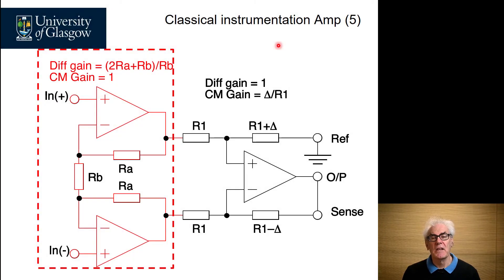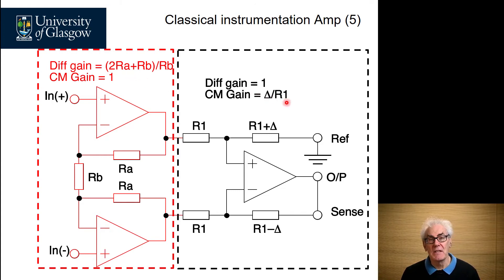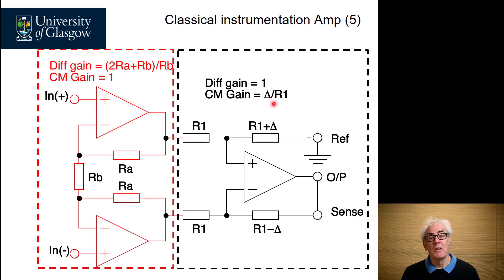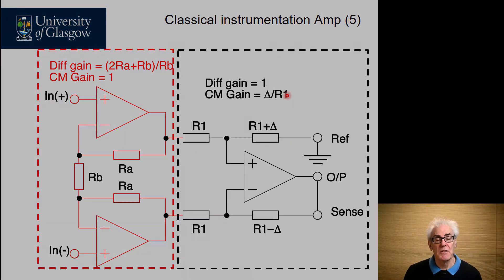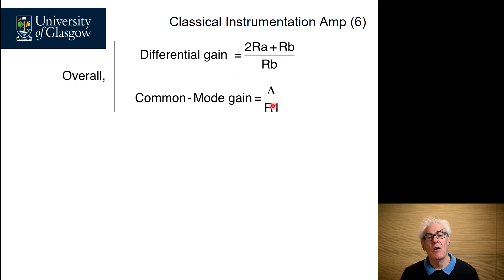When we apply the calculations across the whole instrumentation amplifier, we find that the input buffer stage has a differential gain defined by the resistor values, but a fixed common mode gain of one. From previous analysis, the differential gain of the difference amplifier is times one because all resistor values are equal, and the common mode gain is equal to delta divided by R1. Combining these two sets of equations, the differential gain through the instrumentation amplifier is defined by the input resistors, and the common mode gain is defined by the mismatch of the resistors around the difference amplifier.